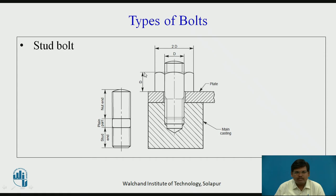This is a stud bolt. Till now we have seen bolts which have threads on one part and a head-like structure on the other. A stud is a type of bolt where both sides of the rod have threads. One part engages one component to be joined and the other part is occupied by the nut, and this is how clamping is done. The middle part where threading is not done is also visible.